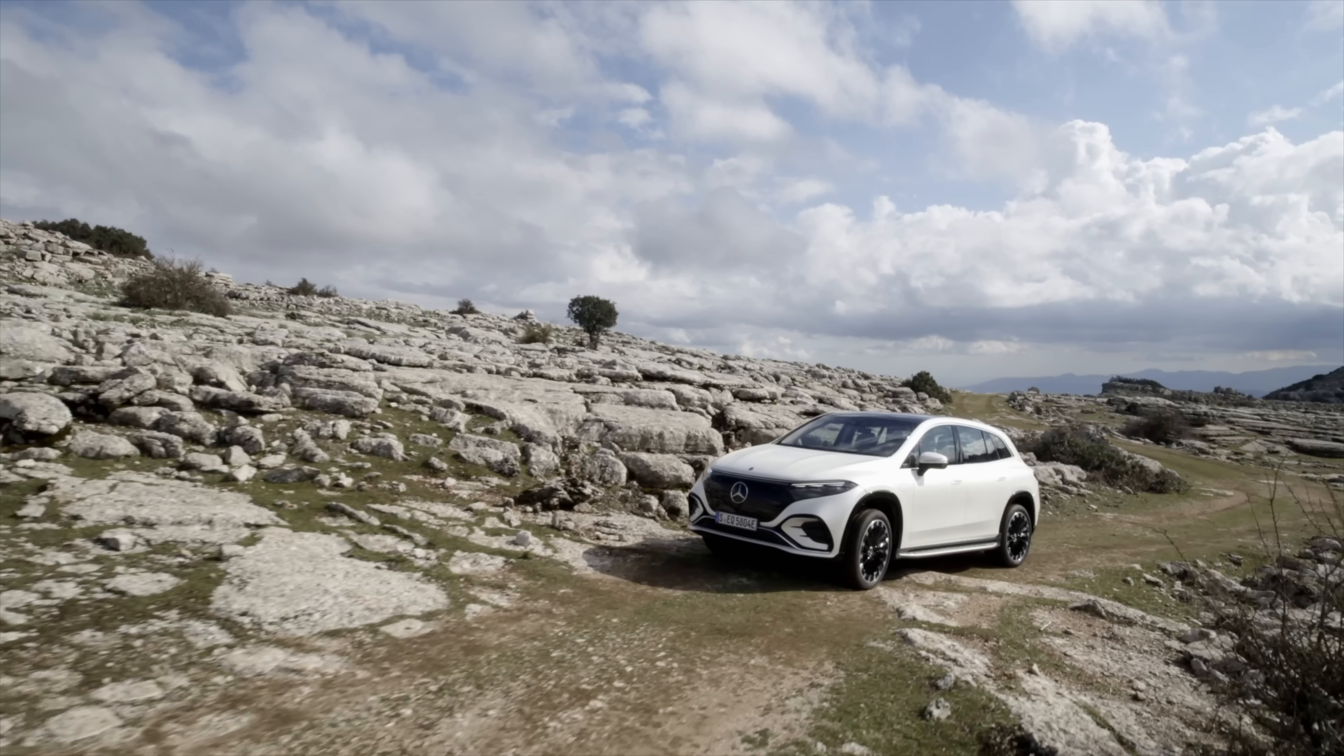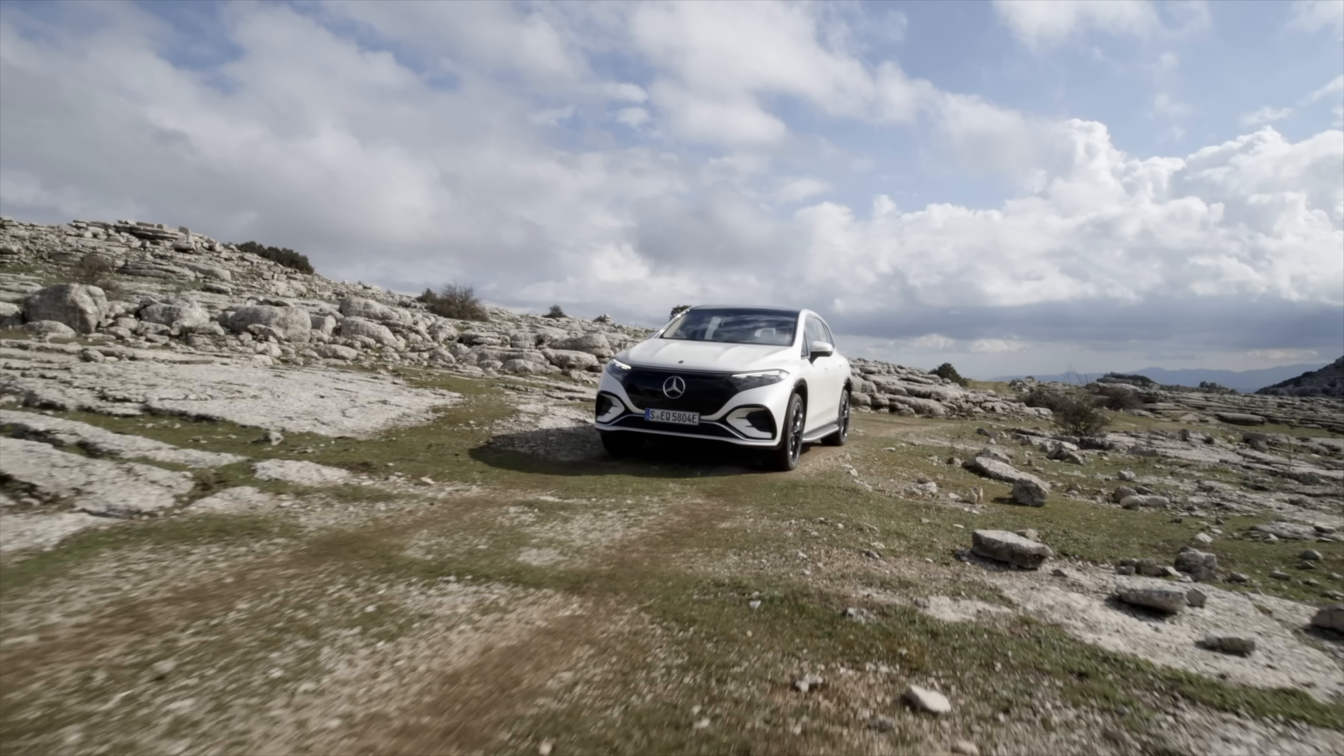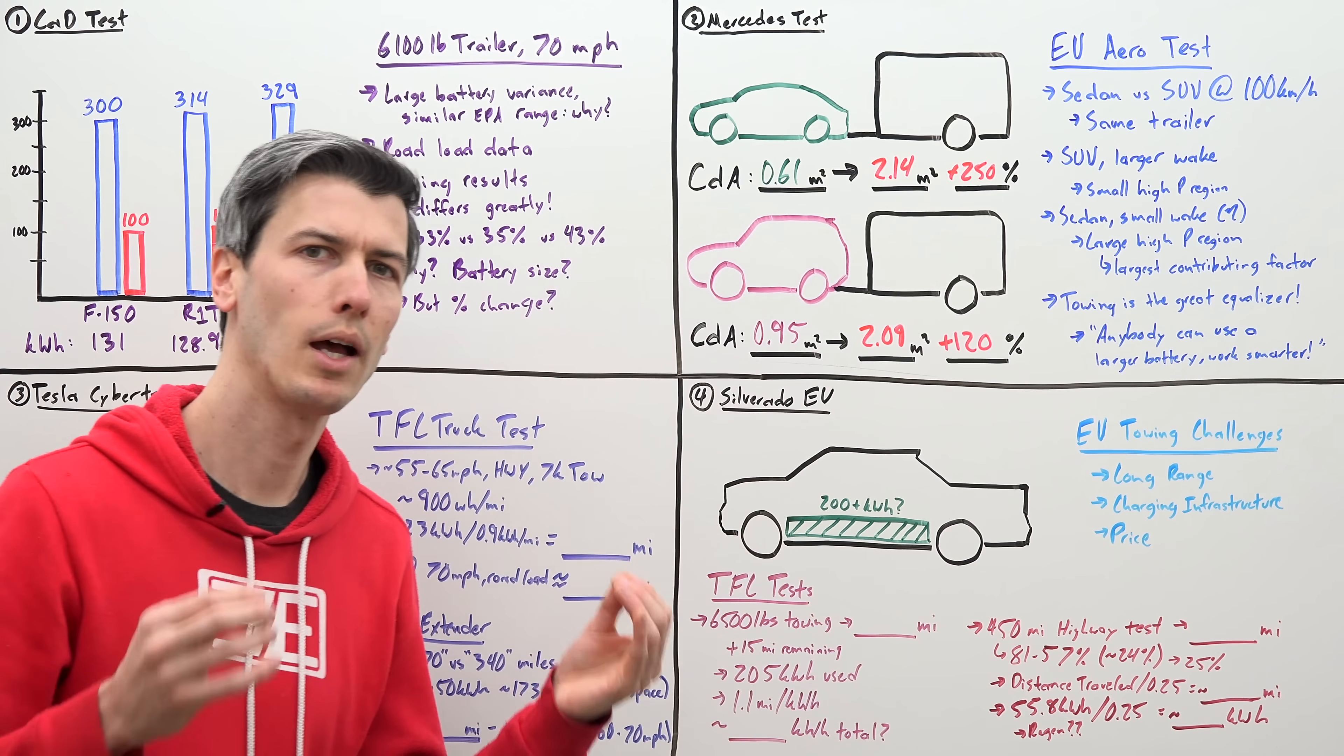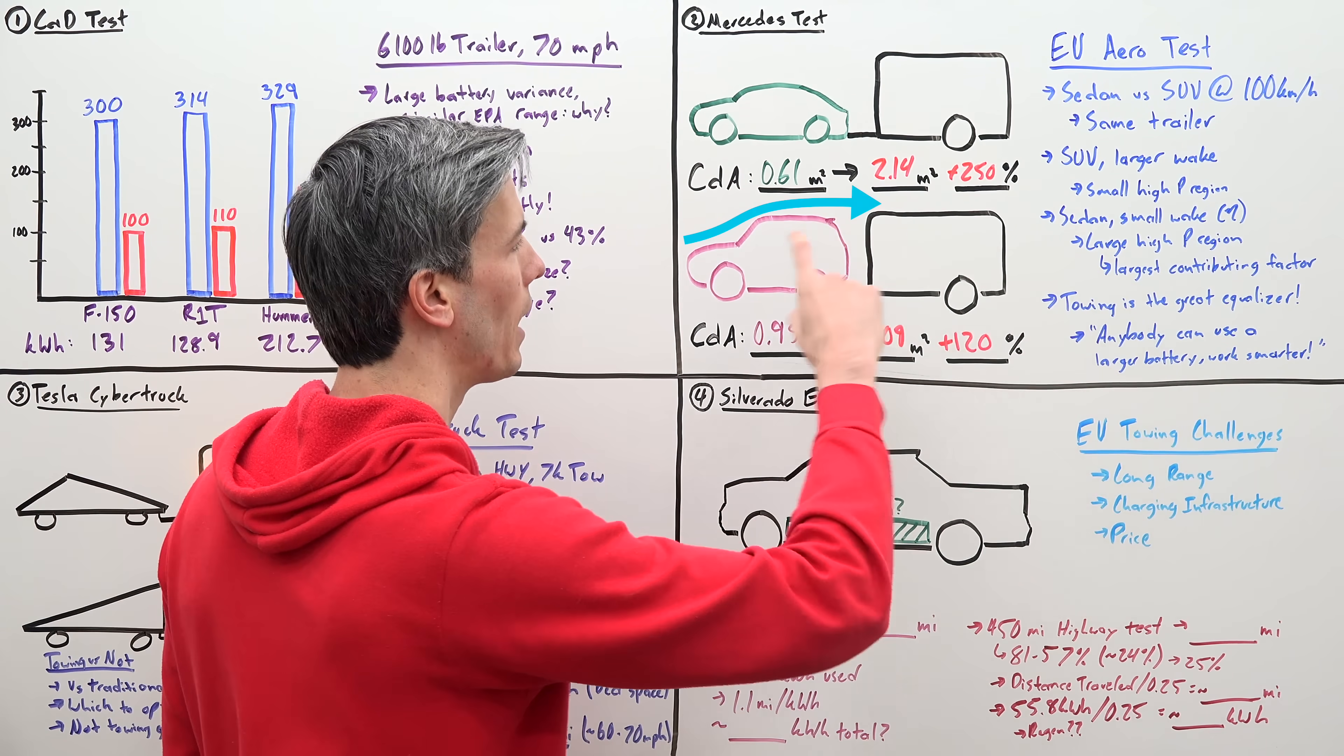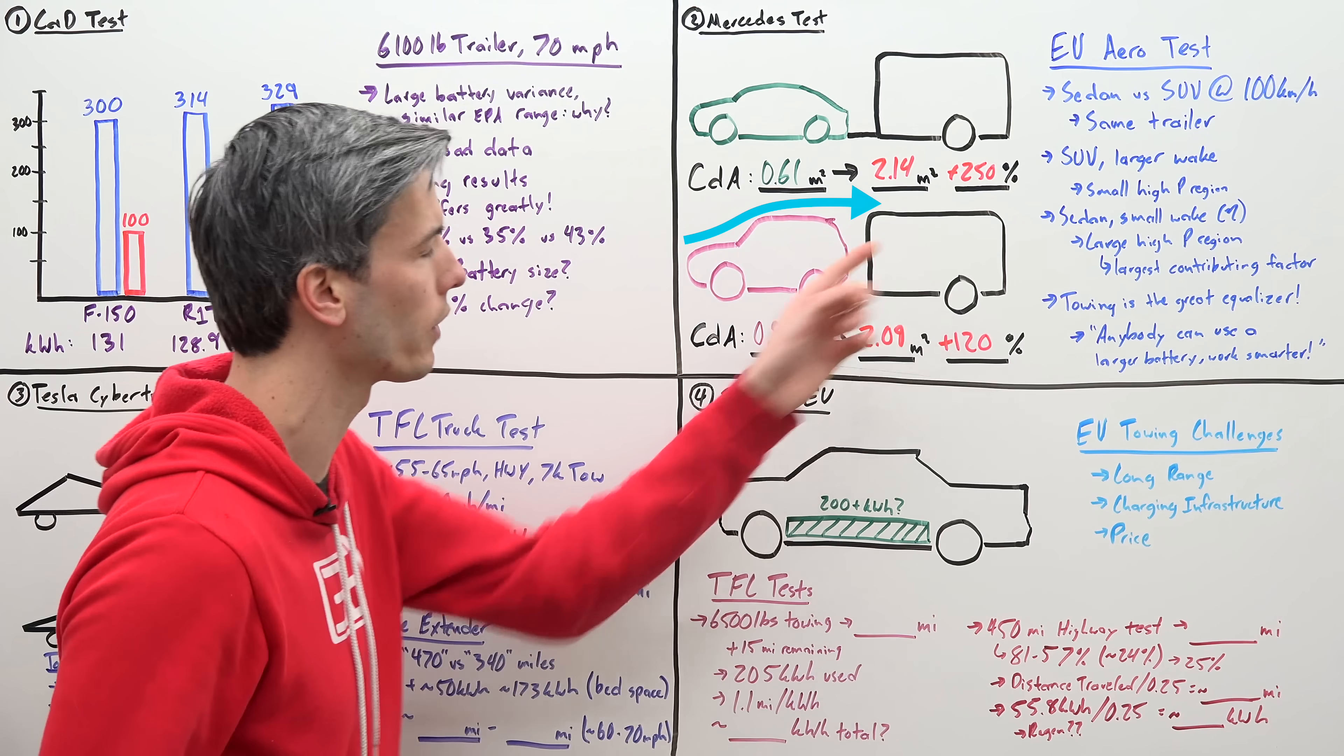All right, so what in the world is going on here? Why would a vehicle that has worse aerodynamics than another vehicle suddenly have better aerodynamics once towing? So a lot of this comes down to the vehicle's wake. So the SUV, because it's a larger vehicle, it has a large wake behind it. And as a result, the airflow doesn't really stack up in front of this trailer.